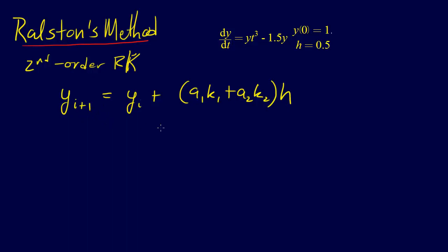And for the second order Runge-Kutta, or excuse me, for Ralston's method, we have A_1 equals 1/3, and A_2 equals 2/3. So the Ralston's method then becomes Y_{i+1} equals Y_i plus (1/3 K_1 plus 2/3 K_2), all times H.